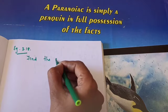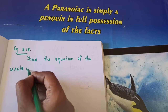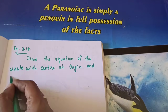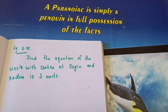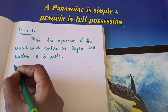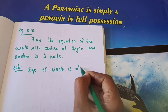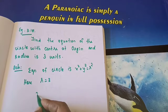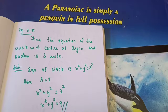Let's do this. Find the equation of the circle with center at the origin and radius 3 units. Since the center is at the origin, use x square plus y square equals R square. Substituting R equals 3: x square plus y square equals 9. That is the answer.